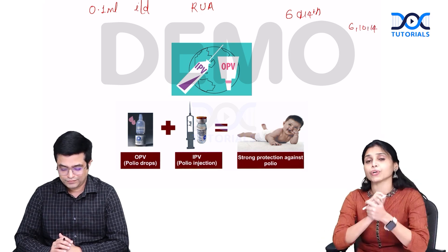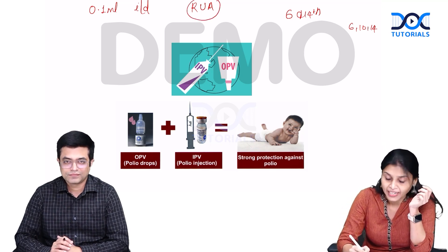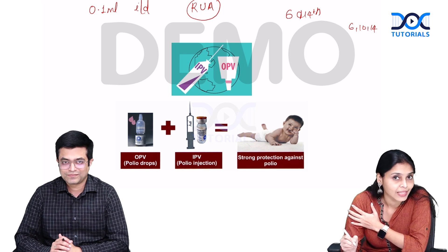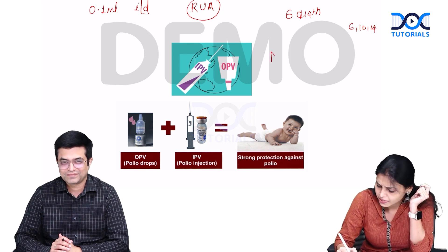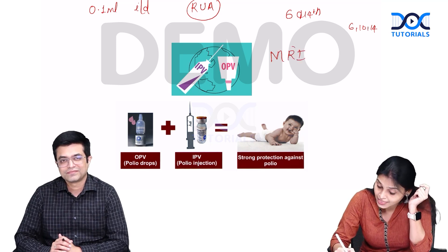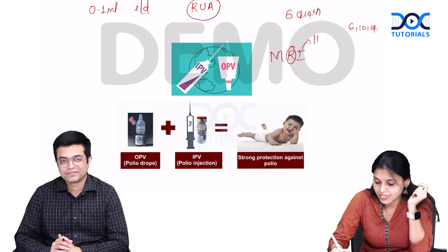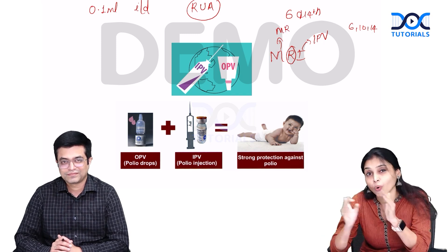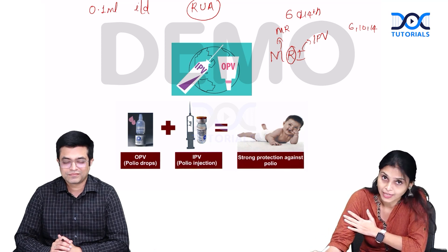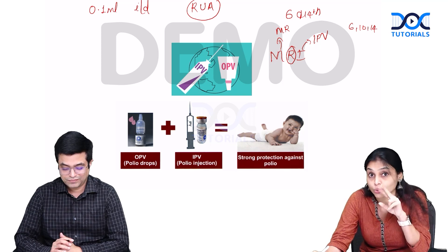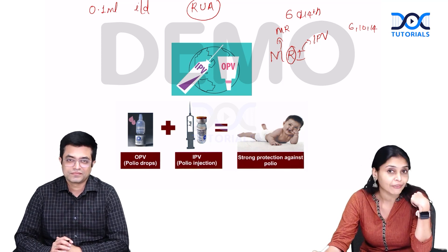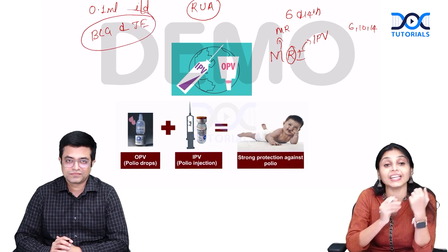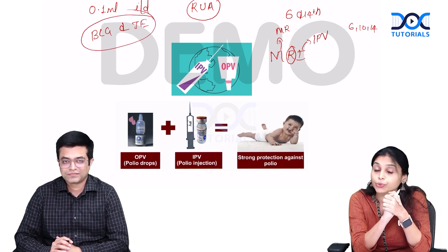Another important MCQ point: IPV is given on the right upper arm. Do you know any other National Immunization Schedule vaccine also given on the right upper arm? Remember the mnemonic MRI — R is right upper arm, I is IPV, and M is MR vaccine. Both IPV and MR vaccine are given on the right upper arm. The vaccines given on the left upper arm under the National Immunization Schedule are BCG and JE vaccine.